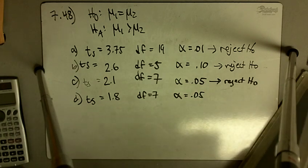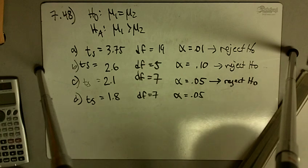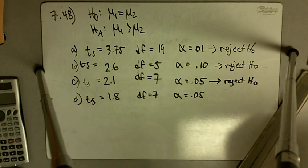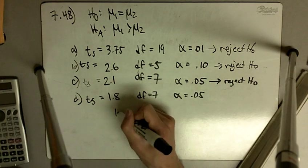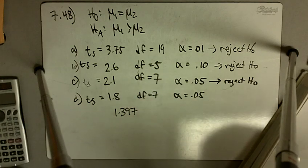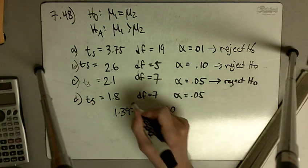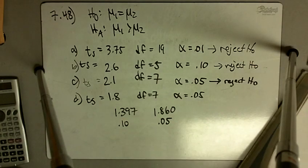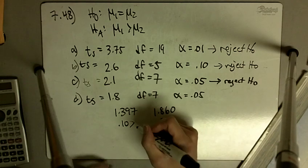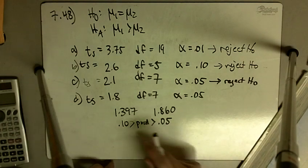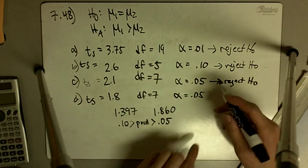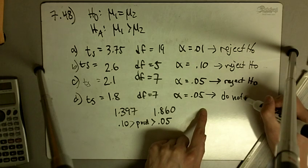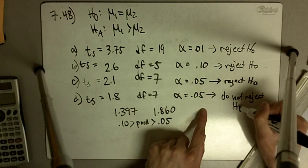So 1.8, going to our t-table, at 7 degrees of freedom, is in between 1.397 and 1.860. So 1.8 is in between here. This is 10% and this is 5%. So our p-value is in between 5% and 10%, so that means it's going to be bigger than 5%, so we do not reject our null hypothesis.